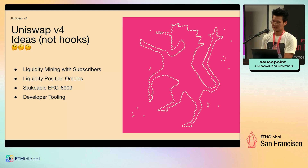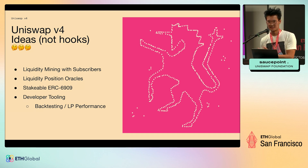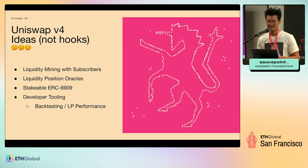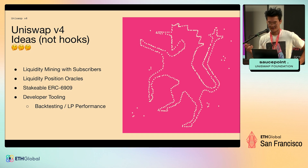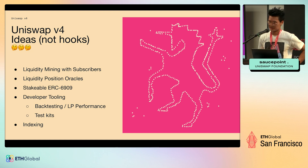Lastly, developer tooling is also a great area — things like backtesting LP performance. One thing we're super optimistic about at the foundation is LP profitability. You can design hooks that increase LP profitability, but it's good to back that up with data rather than just claiming a hook is amazing on Twitter. Building tooling to verify and backtest a pool's performance is valuable. Testing kits and indexing are also really great topics within v4.